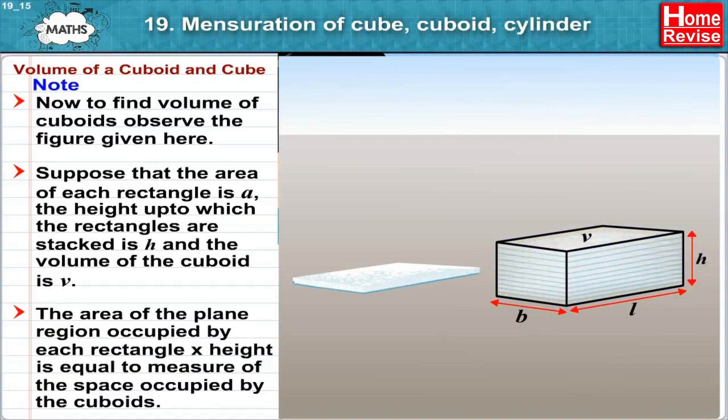The area of the plane region occupied by each rectangle into height is equal to measure of the space occupied by cuboid. So, we get A into H is equal to V.